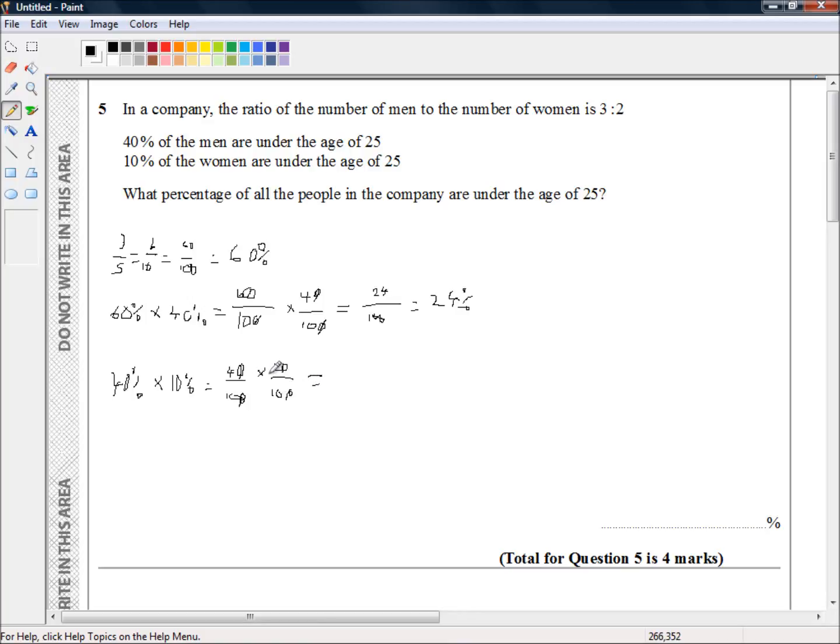Actually, times 1/10. So 4 times 1 equals 4, over 10 times 10, which is 100. So we've got 4/100, which equals 4%. So 4% of the entire workforce are under-25 females.